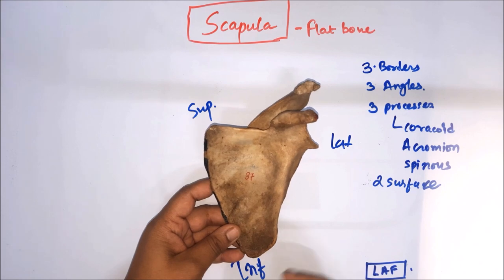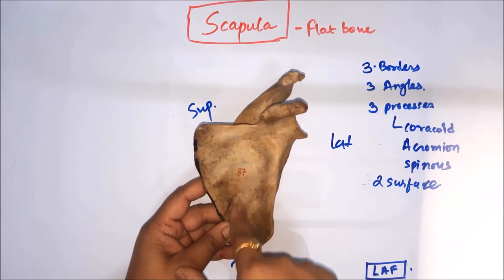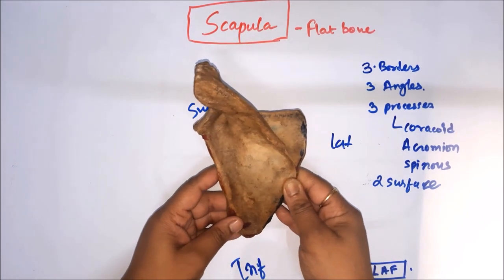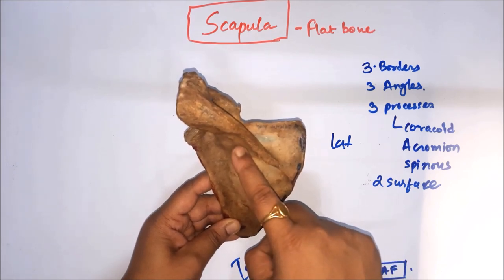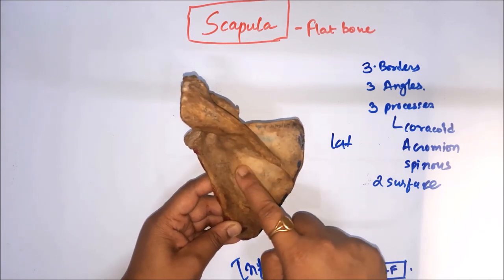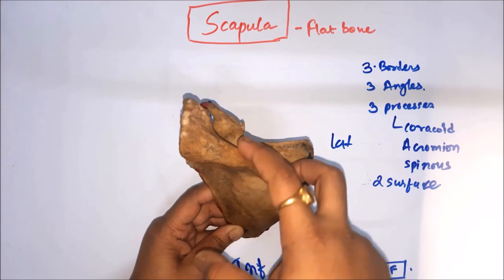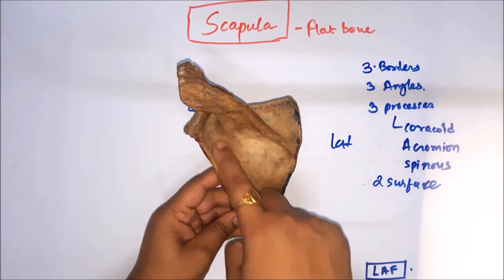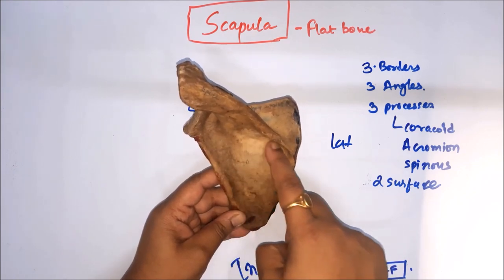Now let us see the attachments on the scapula. On the anterior surface, in the medial two-thirds position, it gives attachment to the subscapularis muscle. On the posterior surface, which is divided into two parts by the spine: the supraspinous fossa gives attachment to the supraspinatus muscle at its lateral two-thirds position, and the infraspinous fossa gives attachment to the infraspinatus muscle at its lateral two-thirds part.